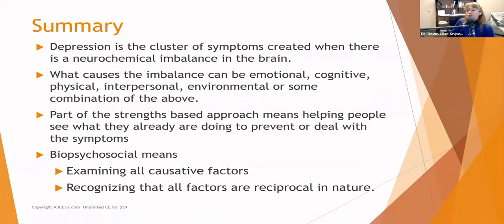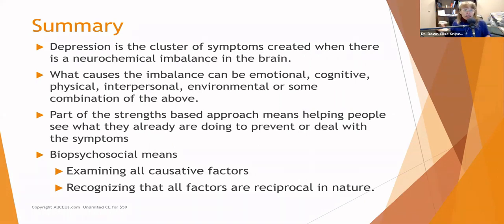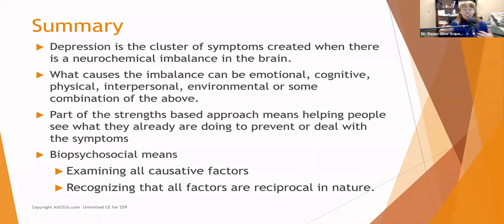Depression is a cluster of symptoms created when there is a neurochemical imbalance in the brain. What causes the imbalance can be emotional, cognitive, physical, interpersonal, environmental, or some combination. We want to help people recognize that depression is a symptom of an underlying problem with neurotransmitter balance, and figure out what's causing those neurotransmitters to be out of whack. Part of the strengths-based approach means helping people see what they're already doing to prevent or deal with symptoms, and recognizing the reciprocal nature between sleep, environment, and mood.